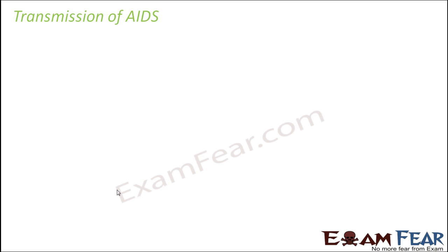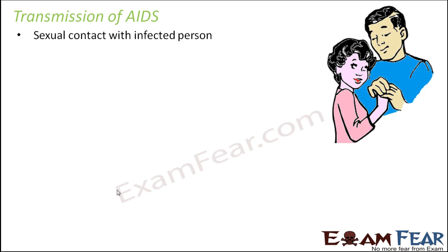Sexual contact with an infected person is one important route of transmission. It is very important to get an HIV test done of your partner before intercourse. It is always advisable not to have multiple sex partners, because the chances of AIDS being transmitted are higher — you don't always know who is HIV positive and who is HIV negative.